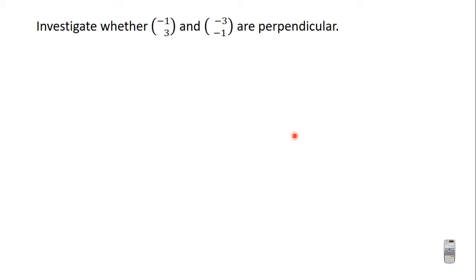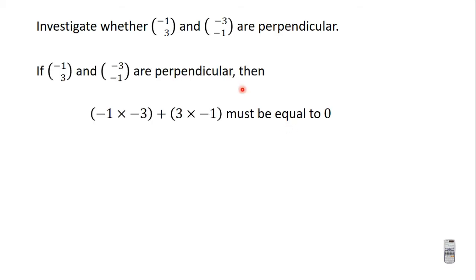Investigate whether (-1, 3) and (-3, -1) are perpendicular. We know that for these two to be perpendicular, minus 1 times minus 3 plus 3 times minus 1 must be 0. If you multiply the x component here by the x component here and add it to multiplying the y component by the y component, you should get 0.